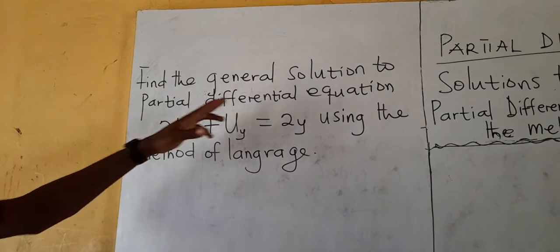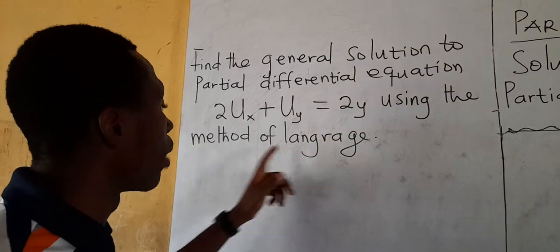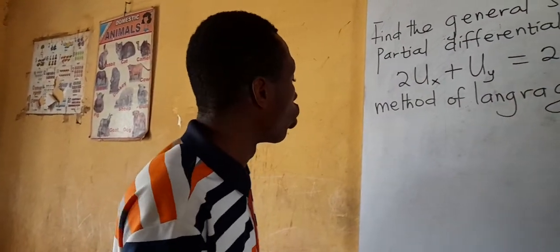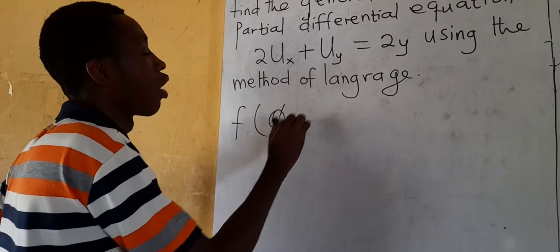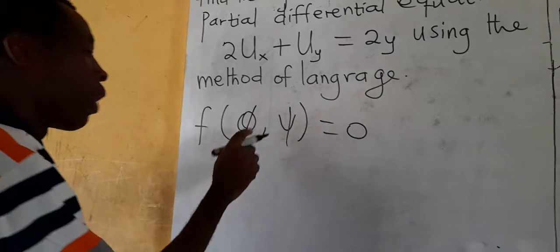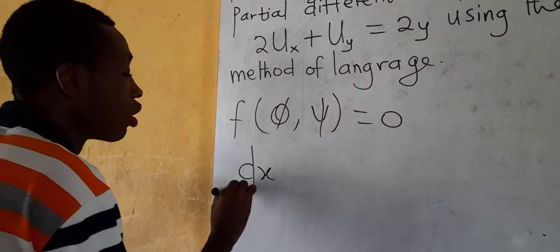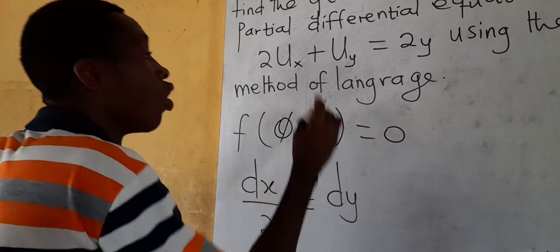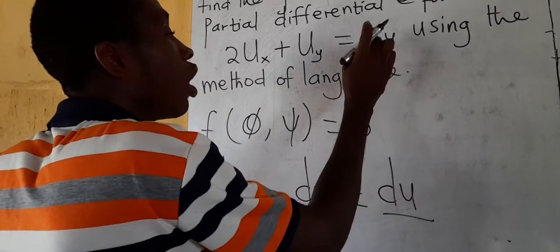Look at the first question: find the general solution to the partial differential equation — the partial derivative of U with respect to X plus the partial derivative of U with respect to Y equals 2Y — using the method of characteristics. Note that the method of characteristics and the method of Lagrange are the same. The general solution will be in the form φ(π, φ) = 0. We form the characteristics equation: dx/1 = dy/1 = du/2Y.